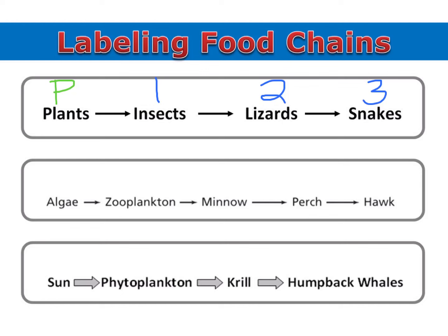Now while we often think of plants as producers, it's very important that you can recognize algae and phytoplankton as being aquatic producers. Then you can just label 1, 2, 3, and 4 for our primary consumer, secondary consumer, tertiary consumer, and quaternary consumer.